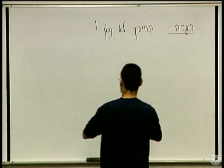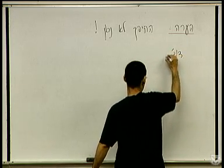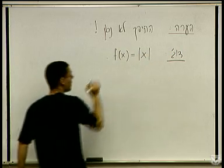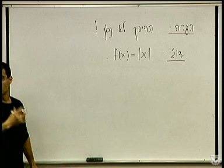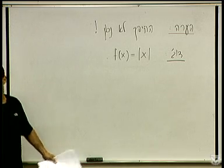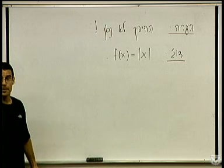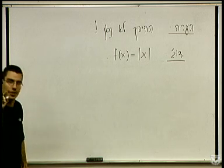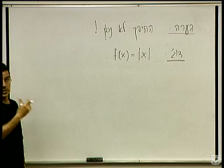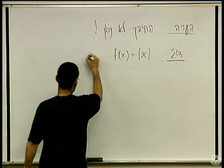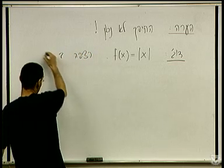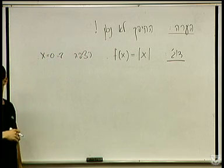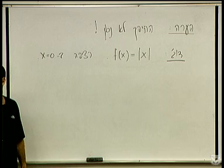הנה הדוגמה: f(x) שווה ערך מוחלט של x. זו דוגמה לשפיץ. פונקציה רציפה לא גזירה - פונקציה שהיא רציפה בנקודה 0 אבל לא גזירה. רציפה בכל נקודה וגם ב-x שווה 0 - זה אנחנו יודעים, כי הגבול מימין שווה לגבול משמאל שווה לערך בנקודה שווה 0.